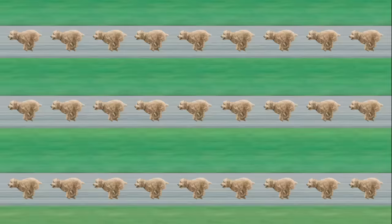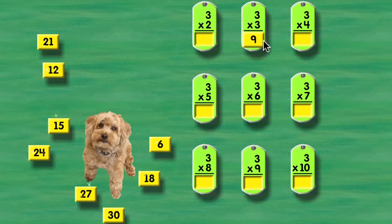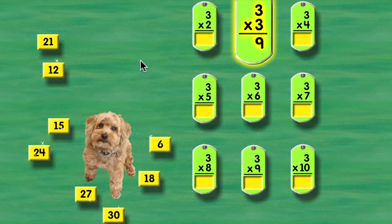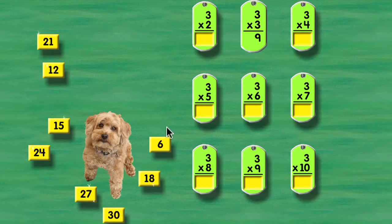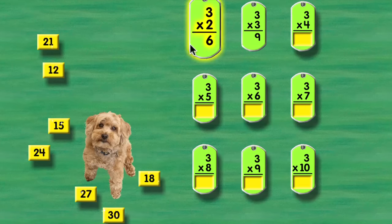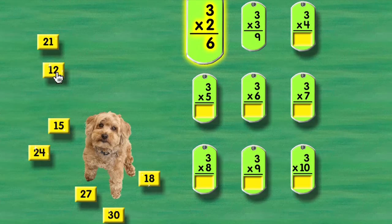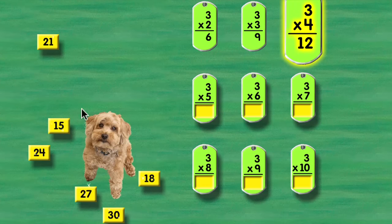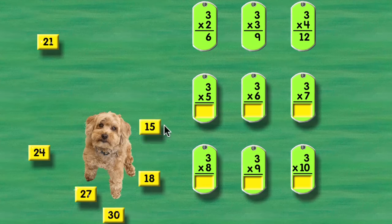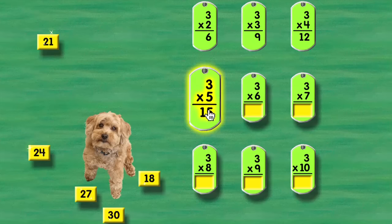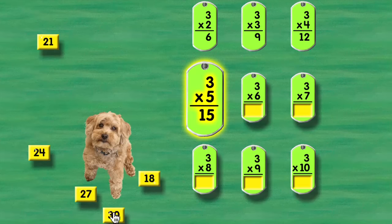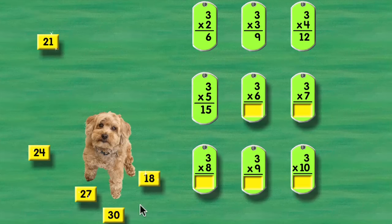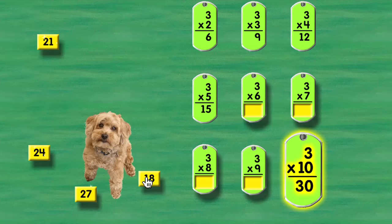Let's learn the three times song. 3 times 3 is 9. 3 times 2 equals 6. 3 times 4 is 12. 3 times 5 is 15. 3 times 10 is 30.